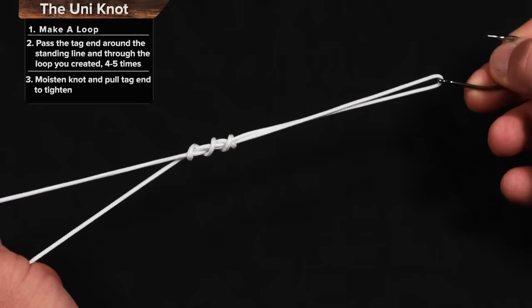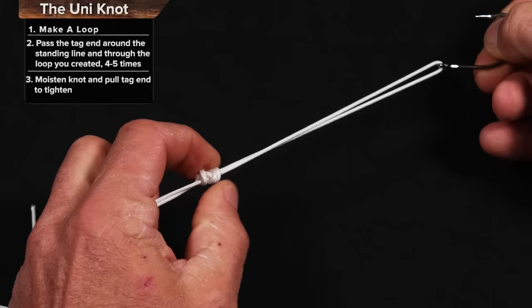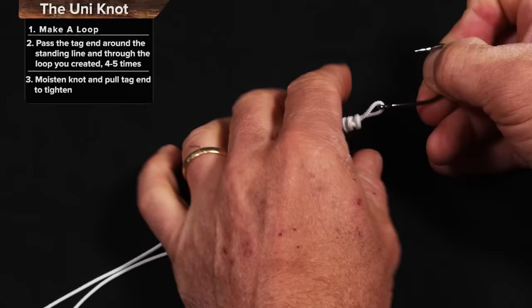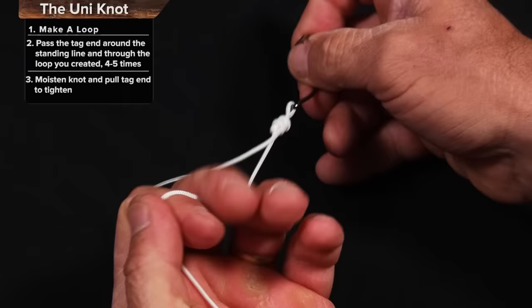Because as I tighten that down loosely, this is still going to slide on the line. So I can start pulling this down to wherever I want the loop. Say I want a loop that big. Now I'm going to get my pliers or whatever. With just the tag end, I'm going to pull this knot tight right there.